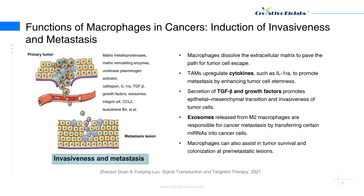Secretion of TGF-beta and growth factors such as EGF analogs promotes epithelial-mesenchymal transition and invasiveness of tumor cells. Exosomes released from M2 macrophages are responsible for cancer metastasis by transferring certain mRNAs into cancer cells, such as colorectal cancer and pancreatic ductal adenocarcinoma cells. In addition to macrophages in primary tumors, macrophages can also assist in tumor survival and colonization at premetastatic lesions. Tissue-resident macrophages have also been demonstrated to promote or restrict metastasis.